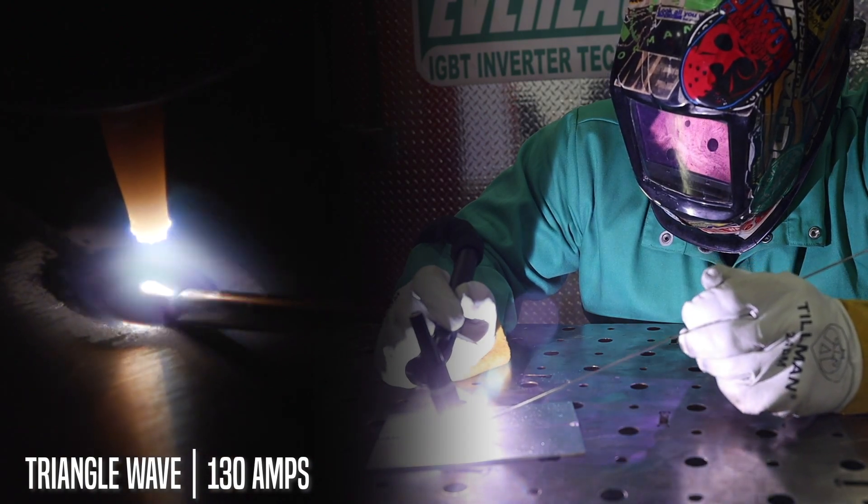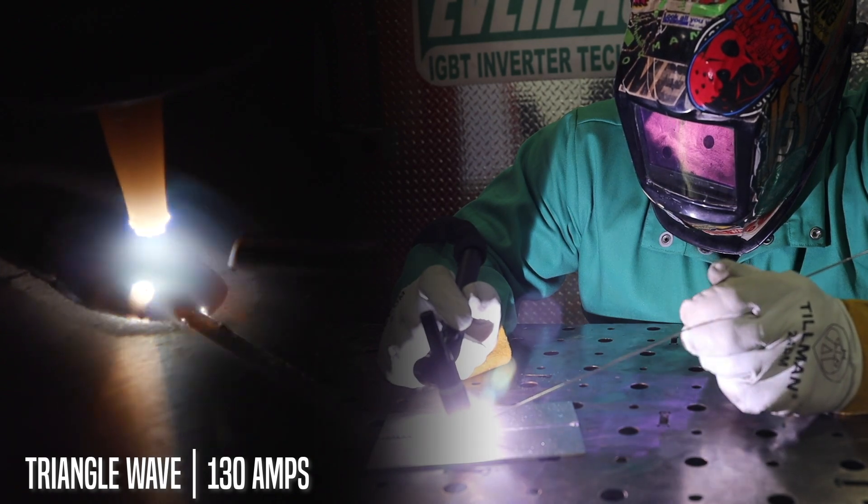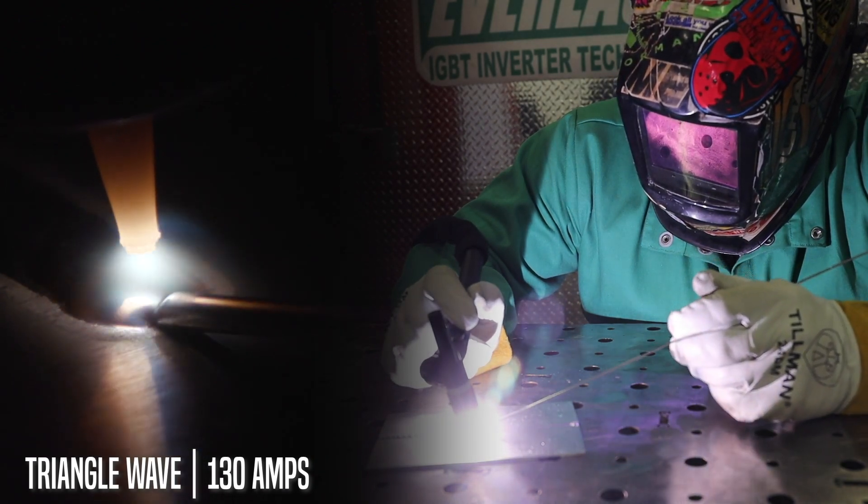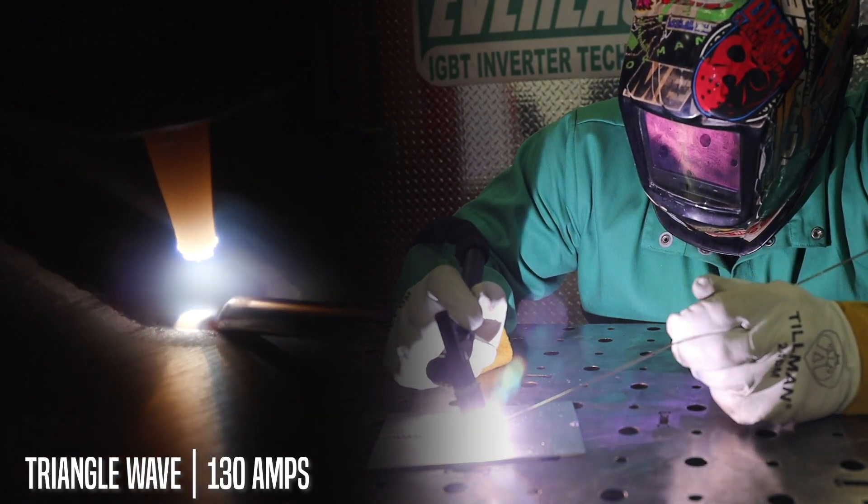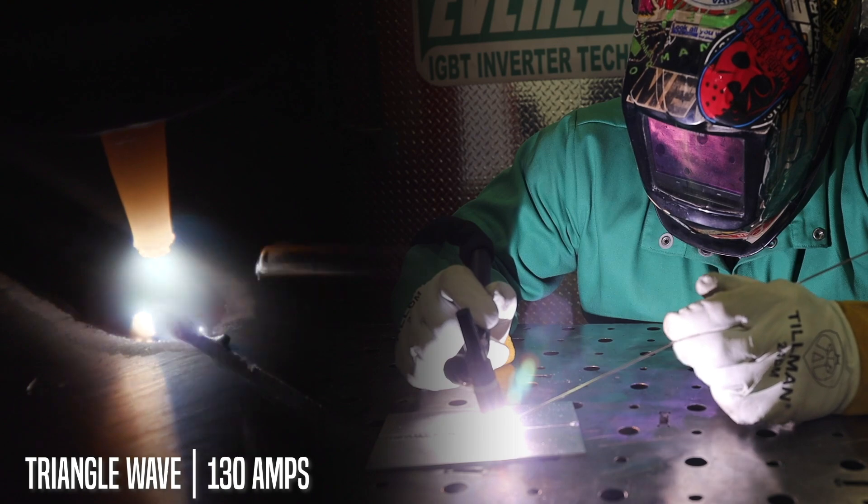Here we are. We're back on triangle wave. We've jumped up to 130 amps. You can see already, puddle forms a lot faster. We're also increasing our travel speed. The toes are tying in a lot better. You can tell before the toes had a real sharp edge to them.